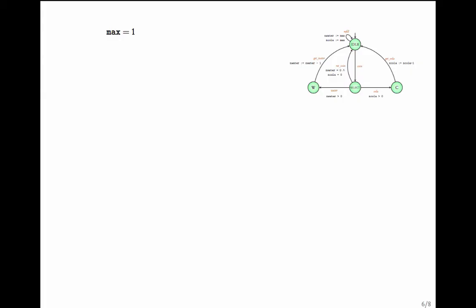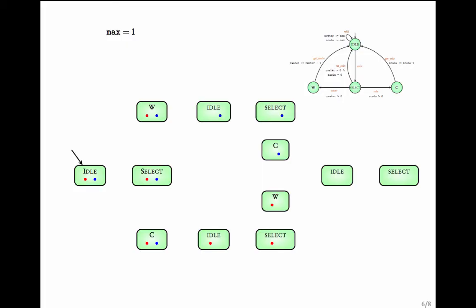To give the transition system, we need to define its states and transitions. To avoid confusion, let me call the states of the program graph as locations. The states of the transition system include the location of the program graph and the current values of the variables. The red dot represents n_water equal to 1 and the blue dots represent n_cola. Initially, the program graph is in the idle location with n_water and n_cola both being 1.